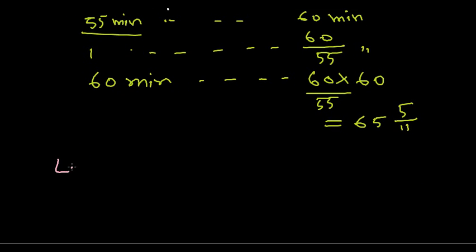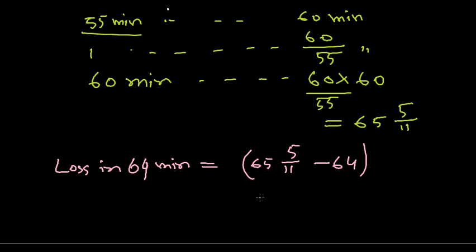What is the loss in 64 minutes? The loss in 64 minutes equals the total minutes we're getting minus 64. So ultimately, the loss is 16/11 minutes.